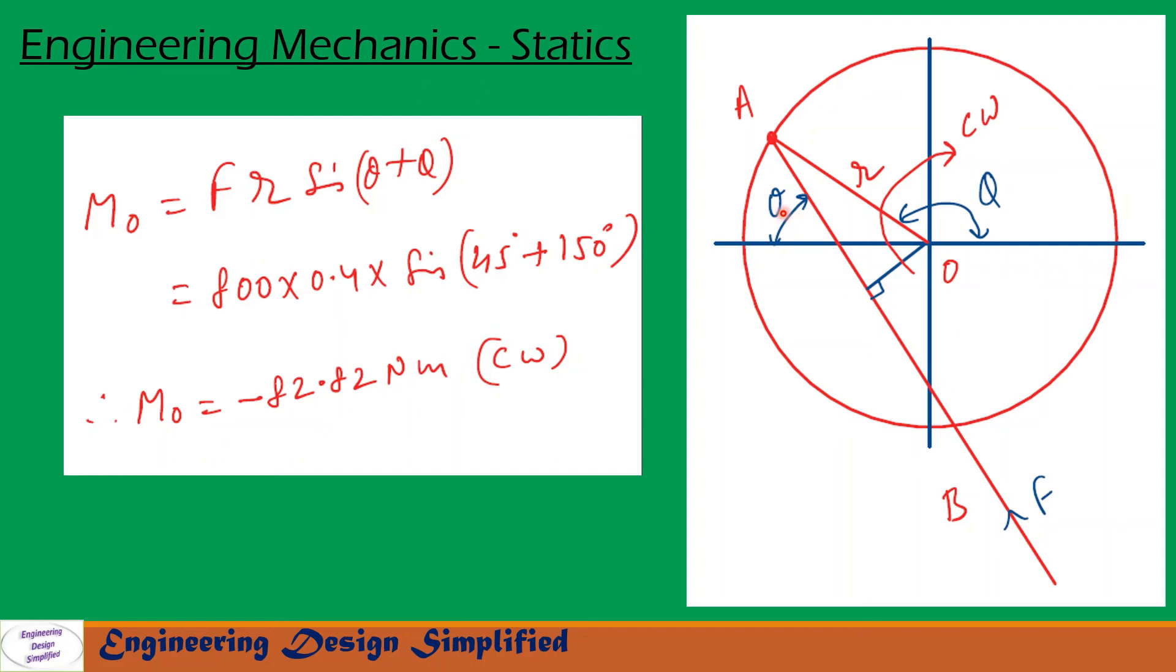Now let us apply the same formula we derived in the previous slide: Mo = F × r × sin(theta + phi). This formula holds true for all angles of theta and phi for this mechanism.